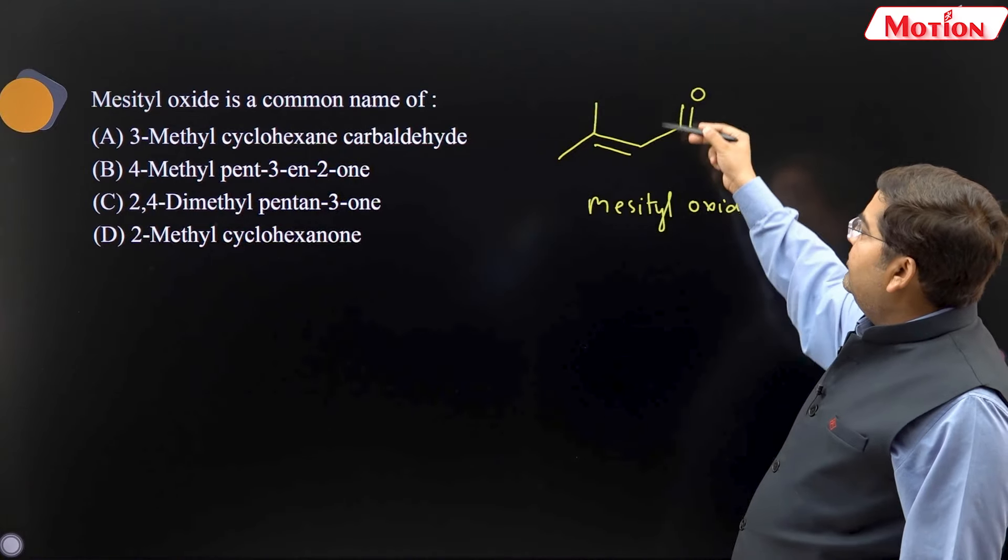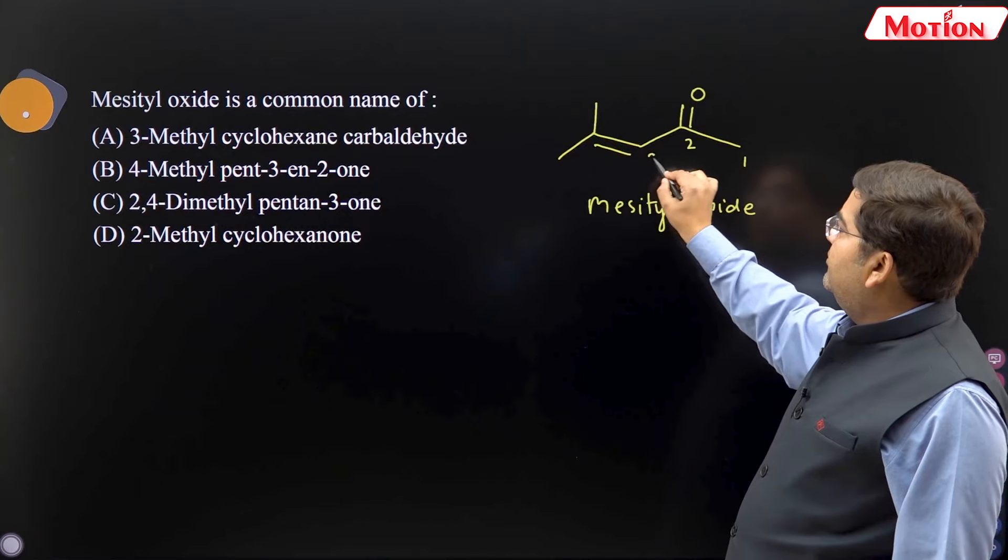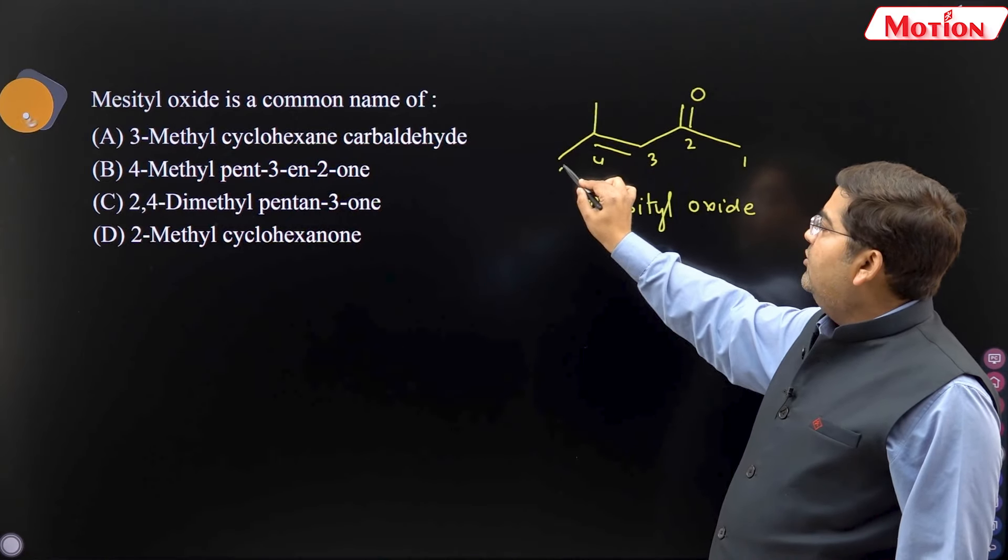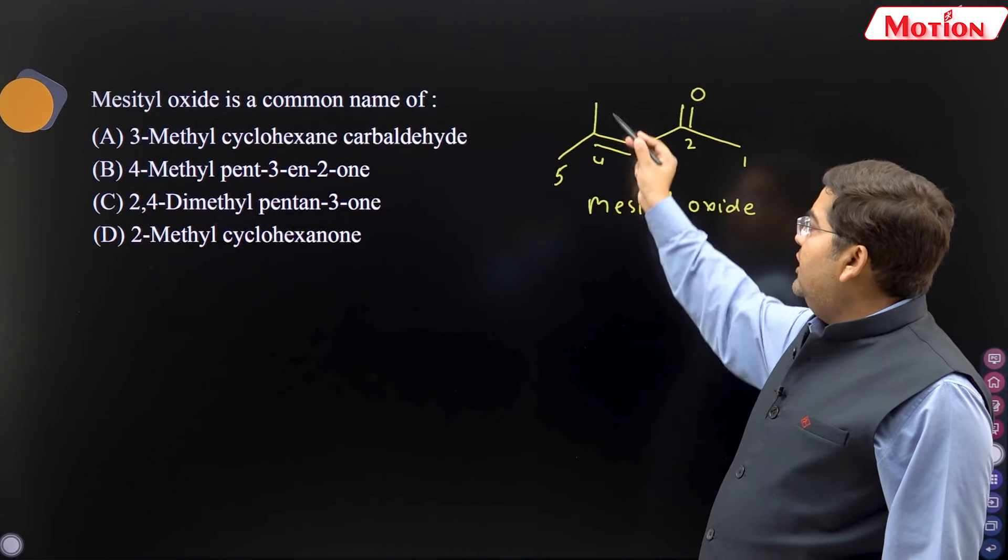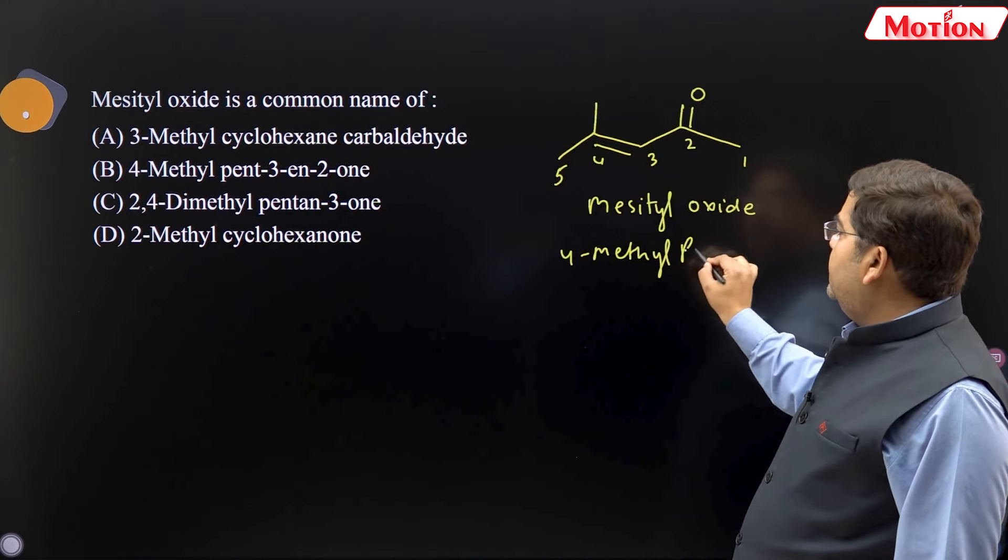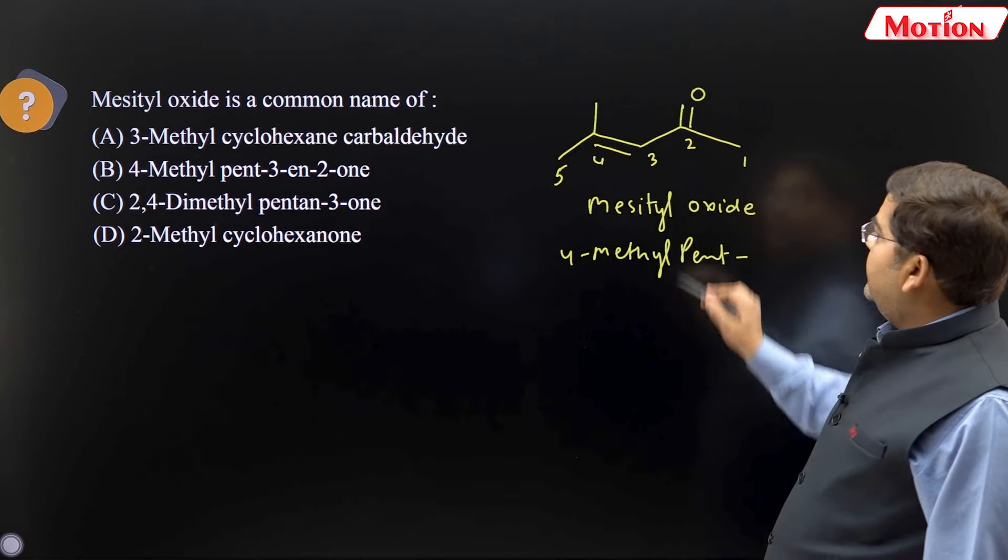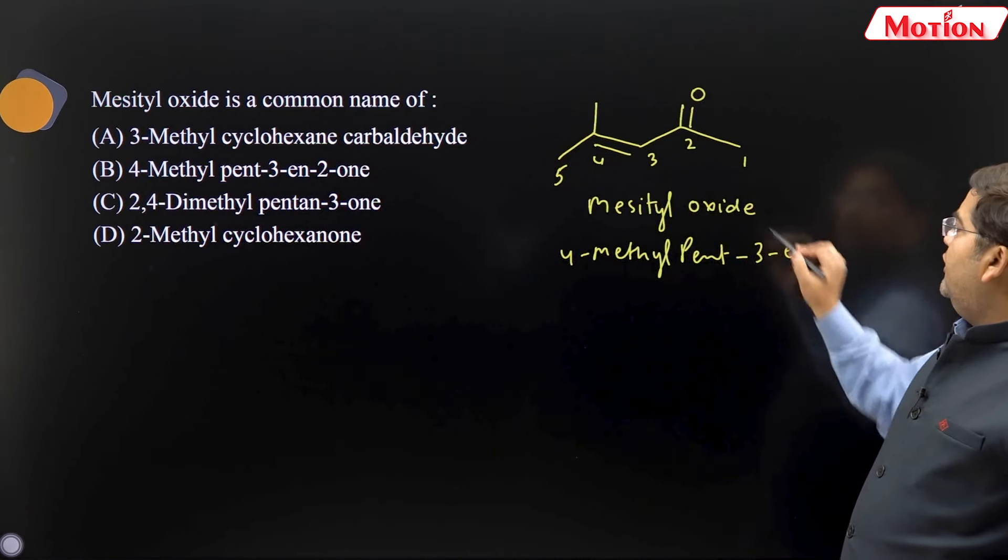Toh ya haa pere main function kone hai, ketone, one, two, three, four, five. Toh kya nam ho jahe ka, pent. 4 number methyl hai, four methyl, pent. Kitnya number pere eene hai, three eene.